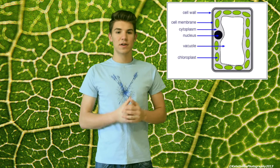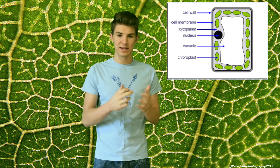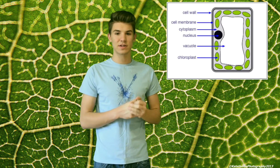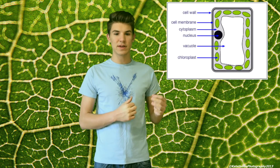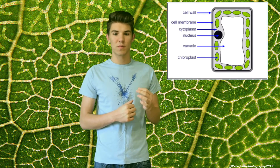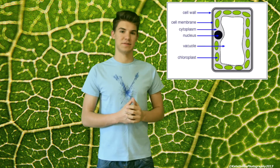There are different types of organelles in palisade cells, but there are six main ones: the nucleus, the cell wall, the cell membrane, the chloroplast, the vacuole, and the cytoplasm.